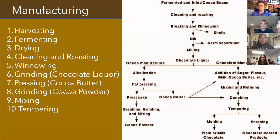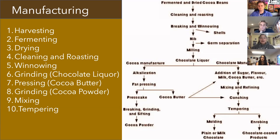Now let's take a closer look at the manufacturing process of creating chocolate. First, after the cocoa beans are harvested, they are fermented — which will be discussed in the next slide — and then dried. After this, the cocoa beans are cleaned and roasted, and then they undergo winnowing, which is a process that separates the cocoa nibs — the part of the pod we actually eat — from the shell and the pulp. Next, the cocoa nibs are ground and pressed into cocoa chocolate liquor. From this point, the liquor can go in two different directions.